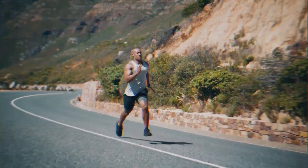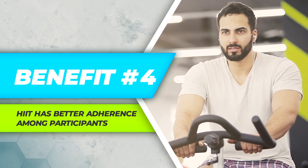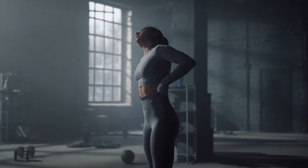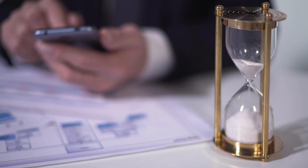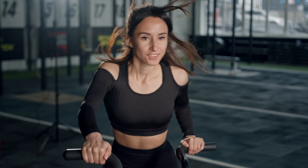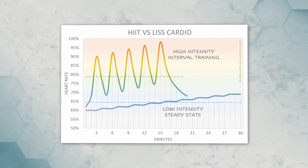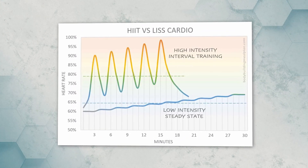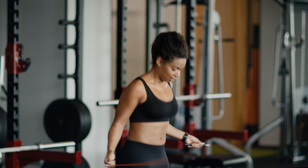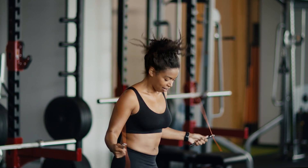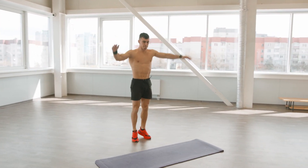Benefit number four: HIIT has better adherence among participants. One of the biggest issues the fitness world faces is that most people give up on an exercise within six months. Two of the biggest reasons are that exercise takes up too much time and that people find it boring. HIIT helps to prevent these issues because the sessions are so short — most workouts are only 10 minutes in duration, making it easier to fit into schedules and harder to get bored.